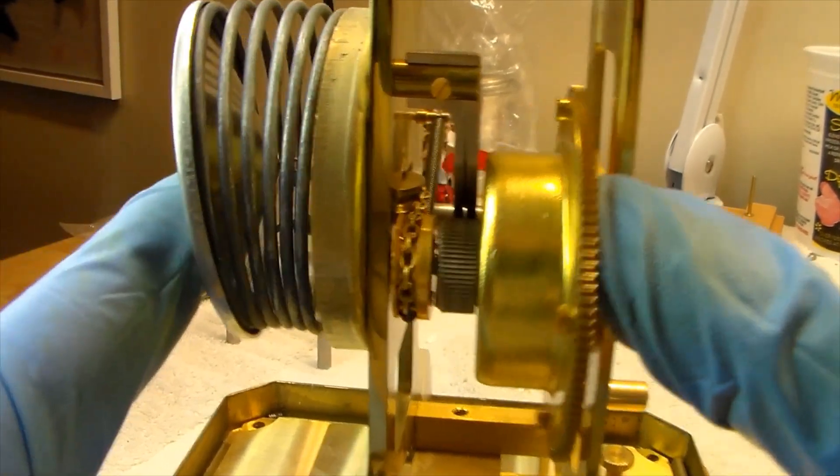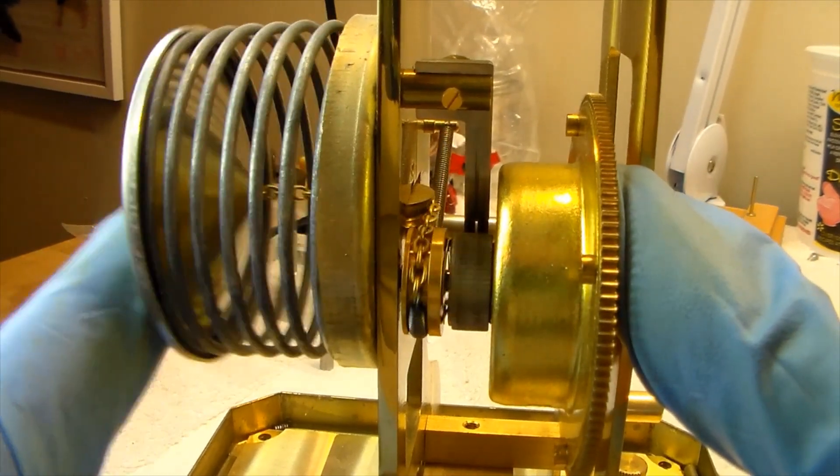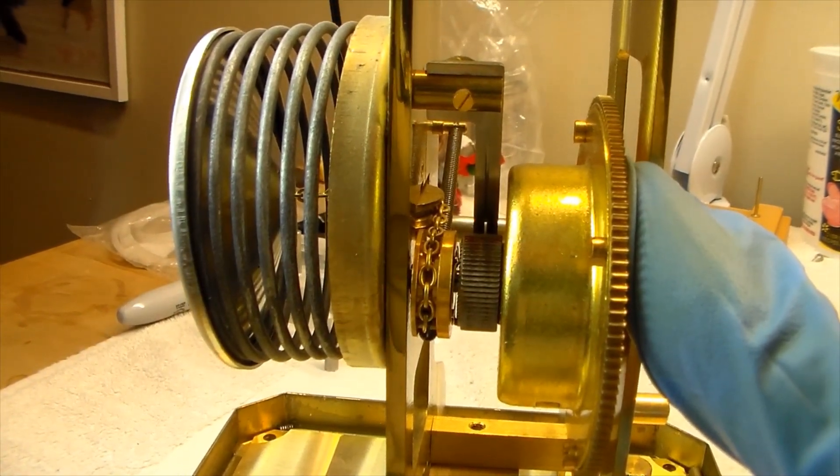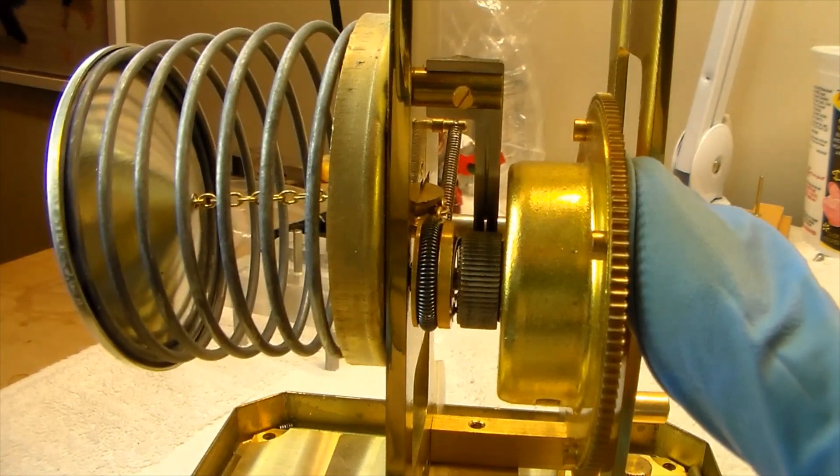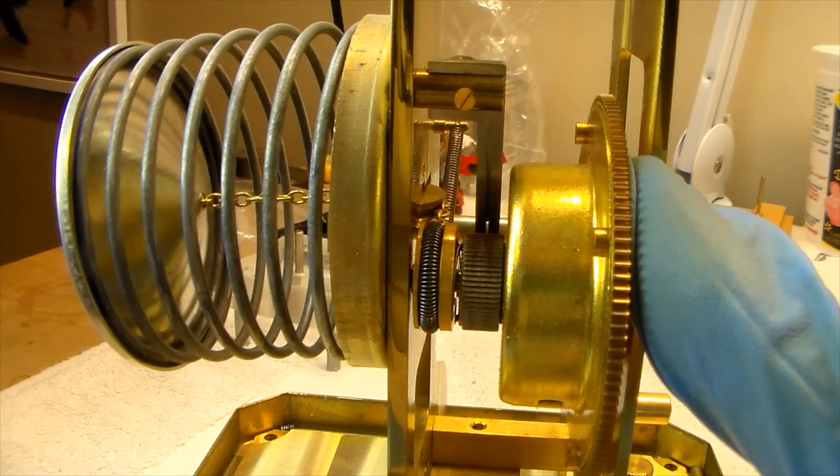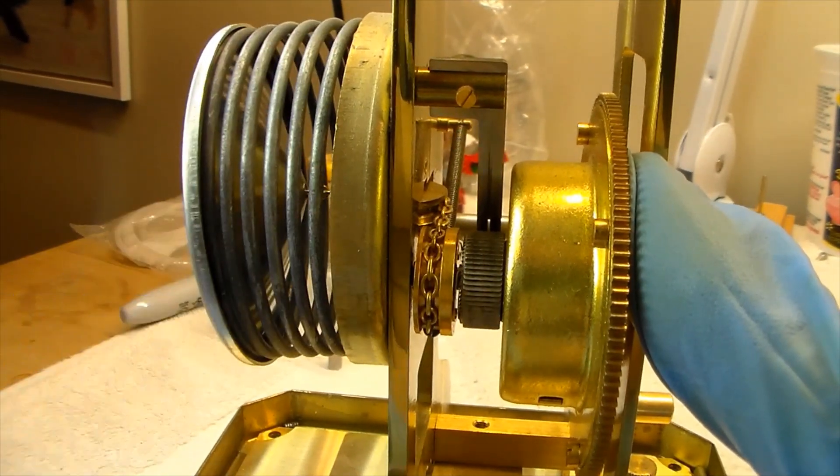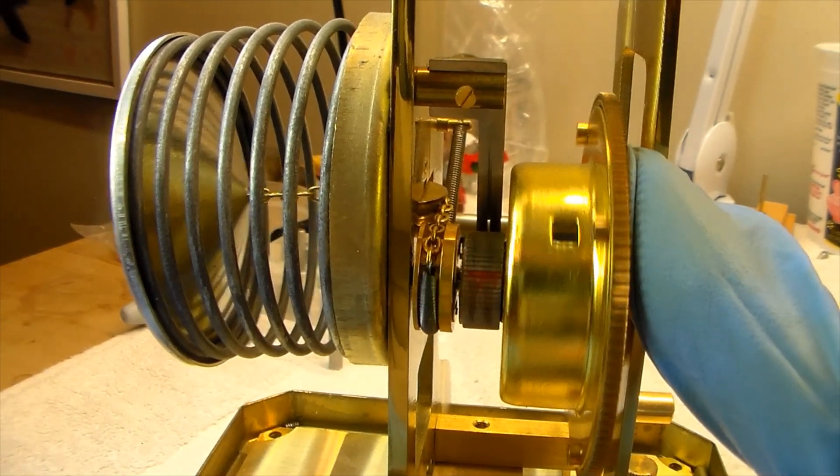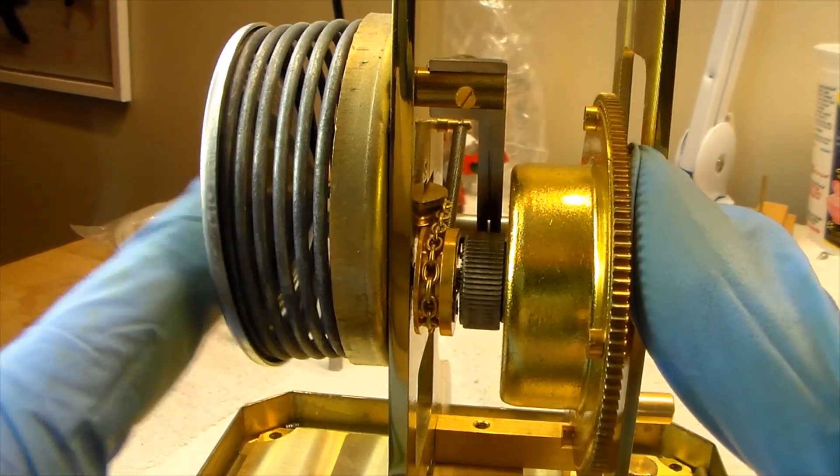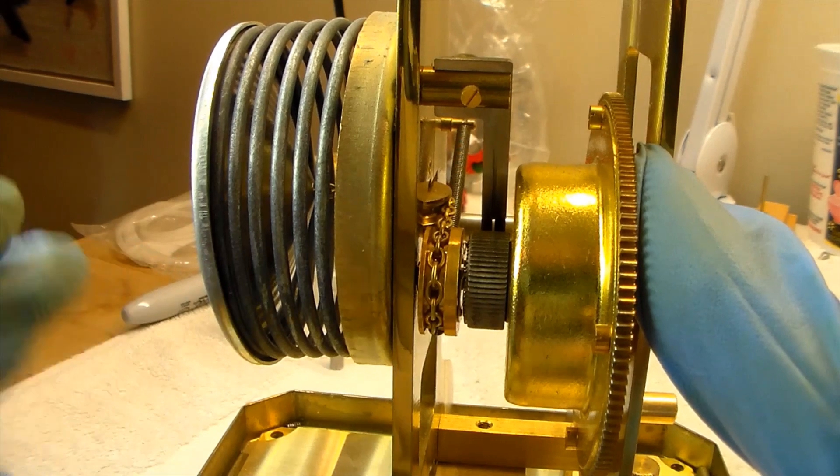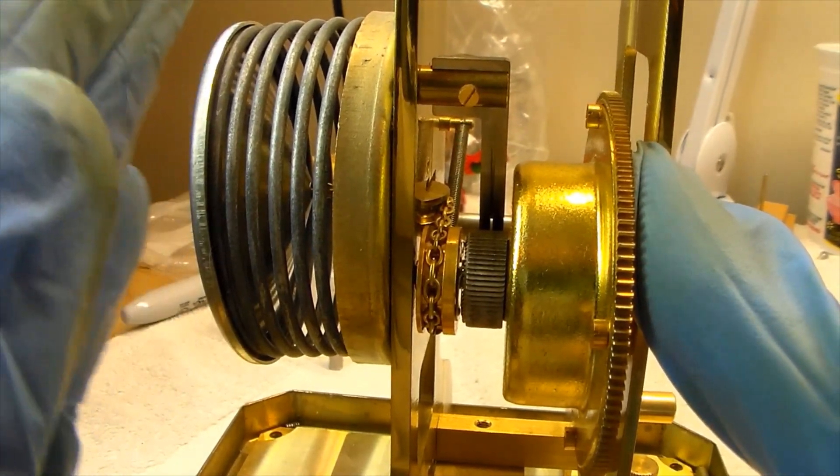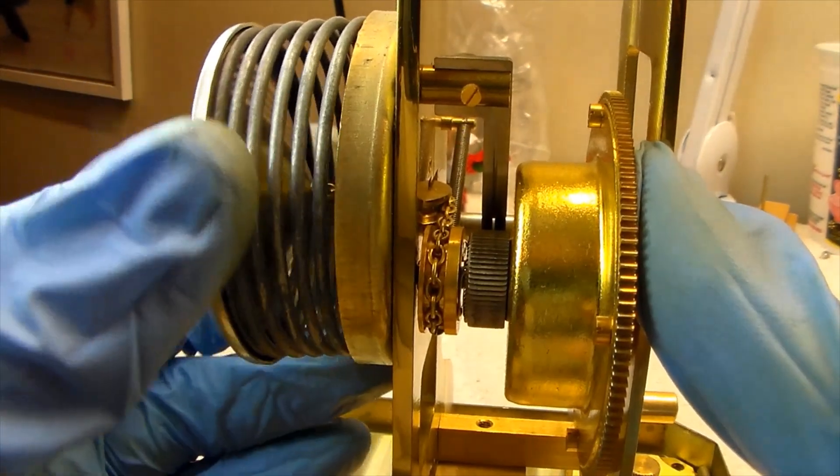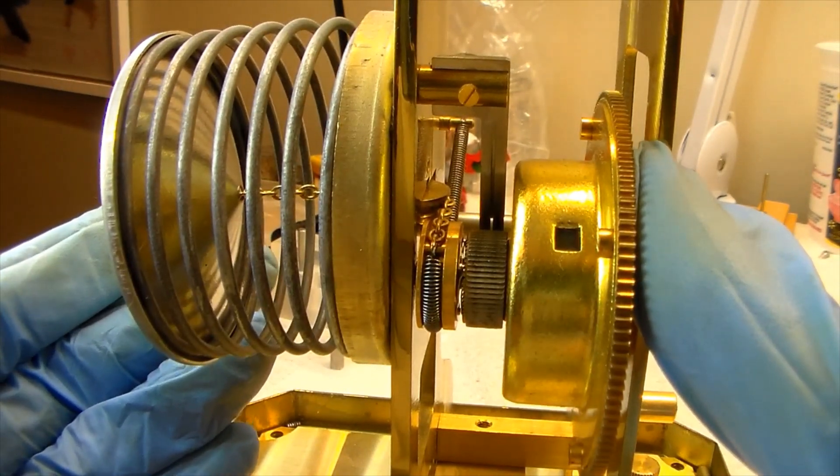So holding this stable you can see what happens here with our counterspring on the back. Gets all tightened up. And as power is released, power is slowly released from this mainspring, you can see that coil spring will then have enough tension or strength to pull that chain. And that's the winding process right there.